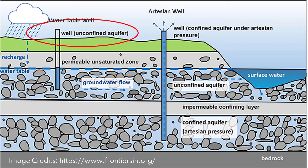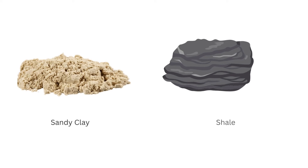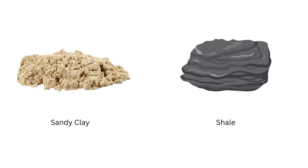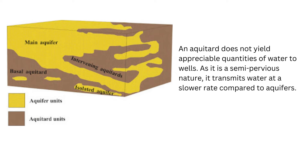More on aquifers and their types will be provided in the upcoming videos. An aquitard is a geological formation with a poorly permeable or semi-pervious membrane that only permits the storage of water, but is not capable of transmitting water in sufficient quantity. Sandy clay, shale, and silty clays are examples of such formations. The figure represents how aquifers and aquitards spread within the ground. An aquitard transmits appreciable quantity of water to or from adjacent aquifers, but does not yield appreciable quantities of water to wells. As it is semi-pervious, it transmits water at a slower rate compared to aquifers.